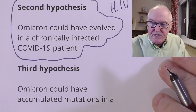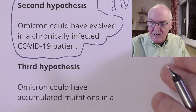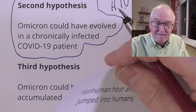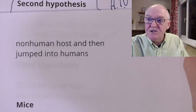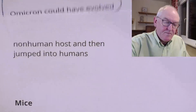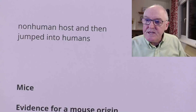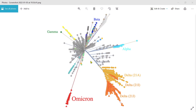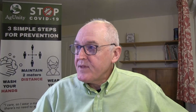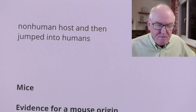The third hypothesis is that Omicron could have accumulated mutations in a non-human host and then jumped back to humans — in other words, it could have come from animals. The original Wuhan strain could have got into an animal group, and since we don't keep surveillance of all animals in the world, it could have mutated away under the human radar and then just reappeared. This is what I think is most likely.